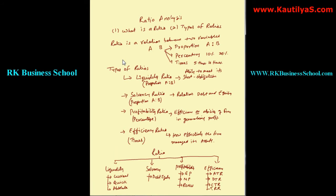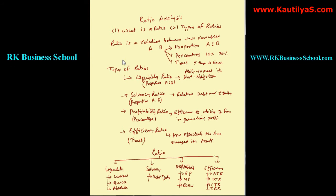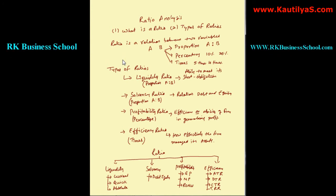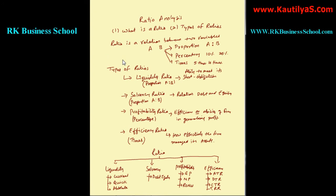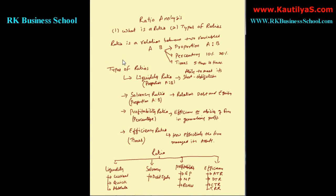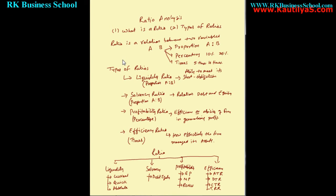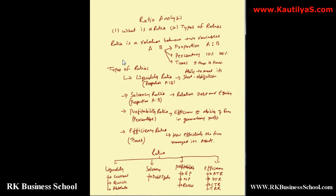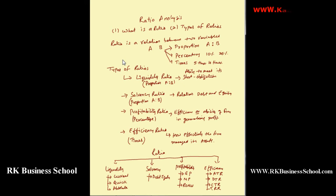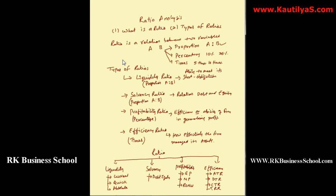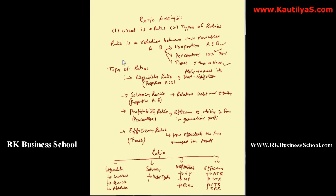These are the simple classification or types of ratios, whereas there are more detailed ratios available. In summary, a ratio is a relationship between two variables and is measured in terms of either proportion, percentage, or number of times.